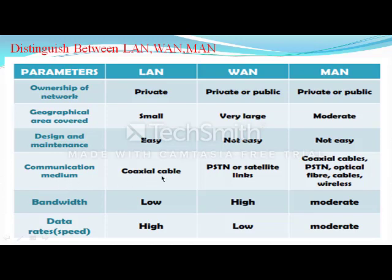Communication medium: LAN uses coaxial cable; WAN uses PSTN, satellite links; MAN uses coaxial cable, PSTN, and optical fiber cables. Bandwidth: LAN is low, WAN is high, MAN is moderate. Data rate speed: LAN is high, WAN is low, MAN is moderate.